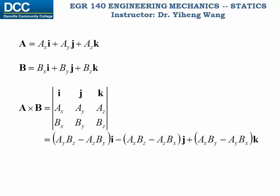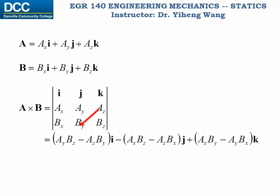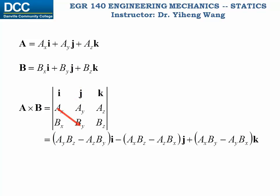If vectors A and B are given in Cartesian form, then we can use a matrix to determine the Cartesian form of the cross product of A and B. In a 3 by 3 matrix, we fill in I, J, K and the components of vector A and vector B in order. Then the cross product equals A_Y times B_Z minus A_Z times B_Y times I, minus A_X times B_Z minus A_Z times B_X times J, plus A_X times B_Y minus A_Y times B_X times K.